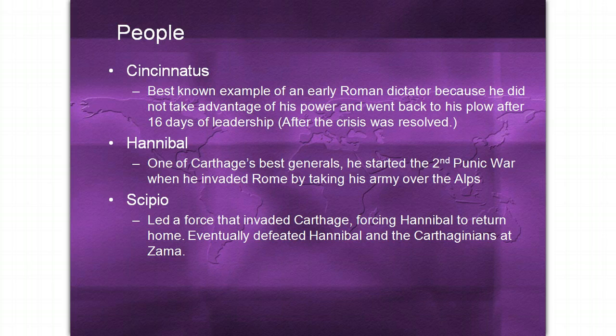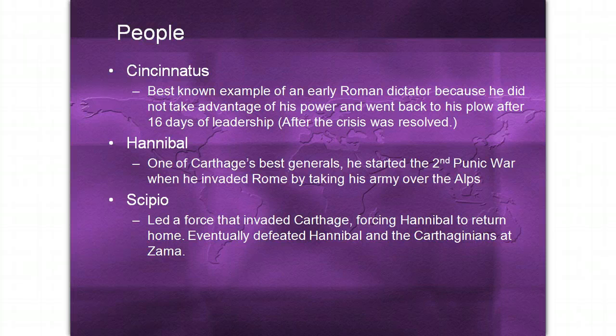Important people for Section 2: Cincinnatus is the best known example of an early Roman dictator because he did not take advantage of his power. He went back to his plow after he helped rule Rome for 16 days of dictatorship. As soon as the crisis was resolved, he went back home to his farm. George Washington even looked up to Cincinnatus as the best example of what a good ruler should be for ancient Rome.